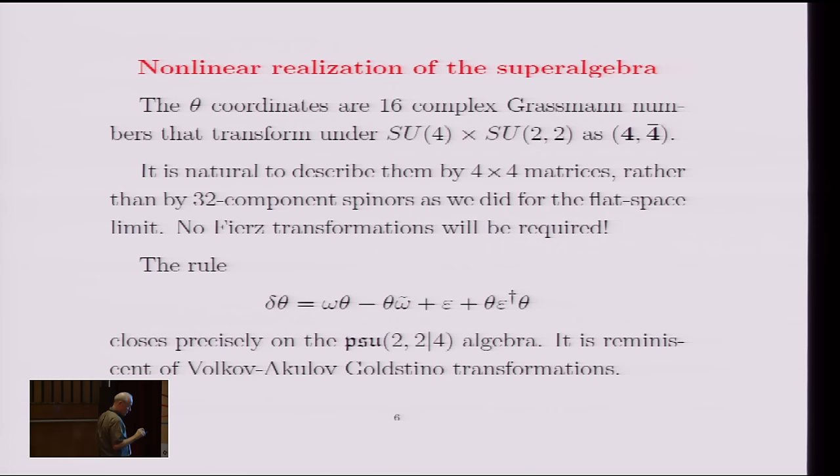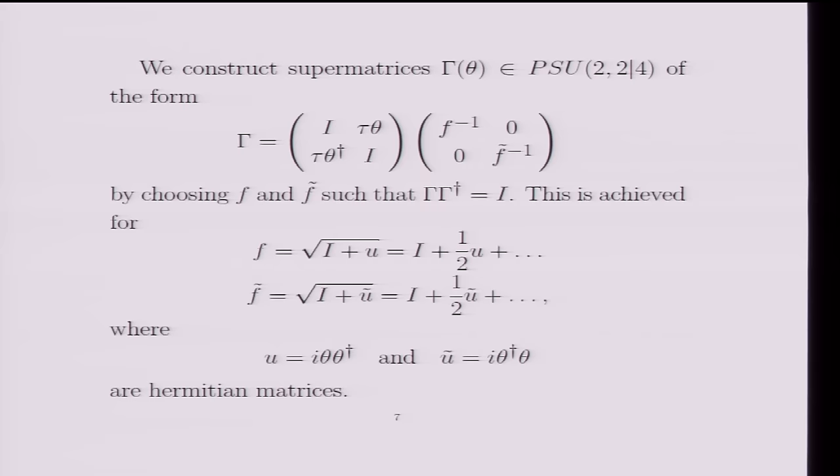So what I'm going to do now is to construct a supermatrix that just depends on theta. We're not talking about bosonic coordinates at all. And it's going to be an element of the group PSU(2,2|4). And it's going to be written in the following form. So these I's here are just unit matrices, 4 by 4 unit matrices. And then we put our theta and theta dagger on the off diagonal blocks with this funny phase that I introduced earlier.